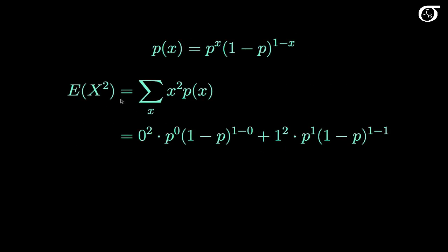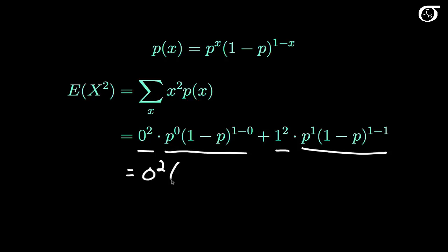The expectation of x squared is equal to the sum over all possible values of x, of x squared times the probability of that value of x occurring. Here the random variable can take on the values 0 and 1. So the expectation of x squared is 0 squared times (1 minus p), plus 1 squared times p. That works out to p. So the expectation of x squared is equal to p.